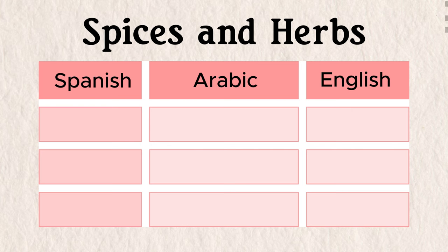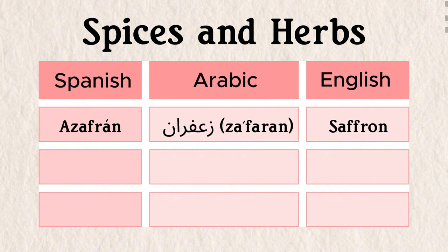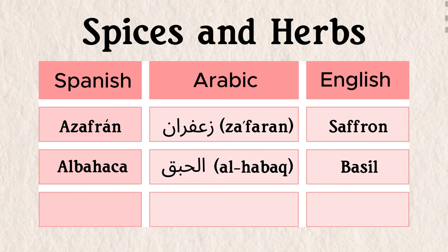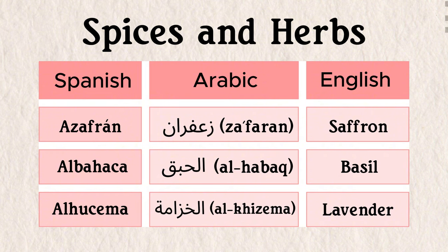Speaking of things getting spicy, Spanish also has Arabic words for spices and herbs: azafrán (saffron) from zaʿfarān; albahaca (basil) from al-ḥabaqa; and alhucema (lavender) from al-khuzāma.